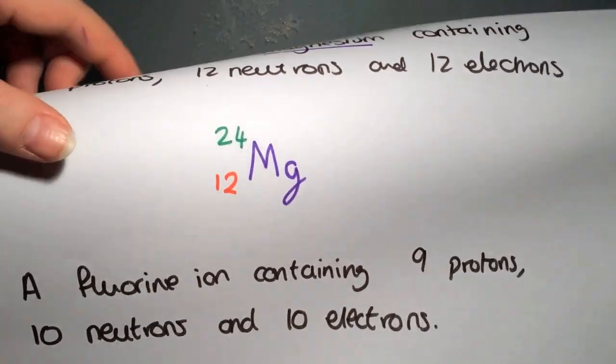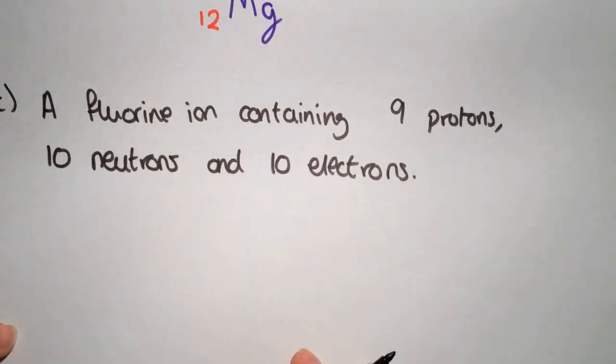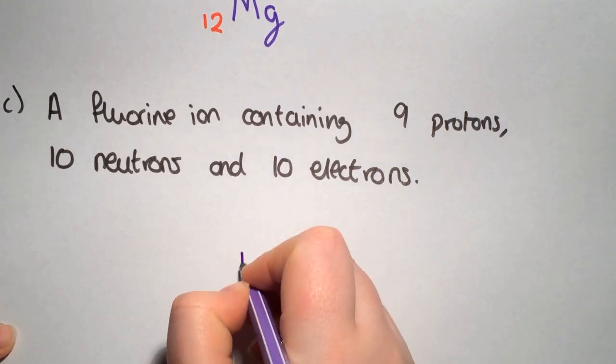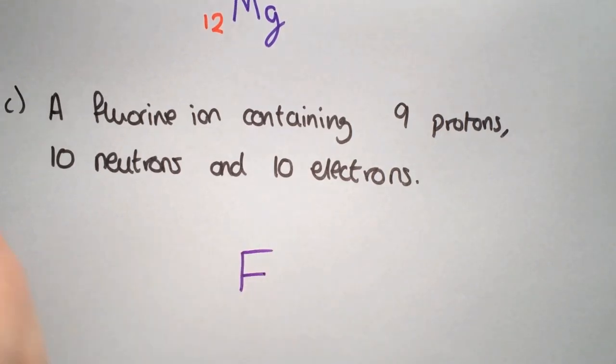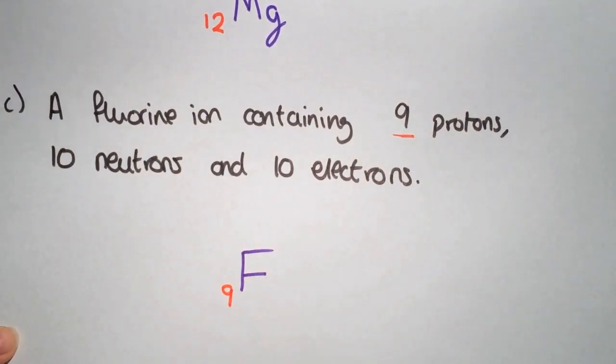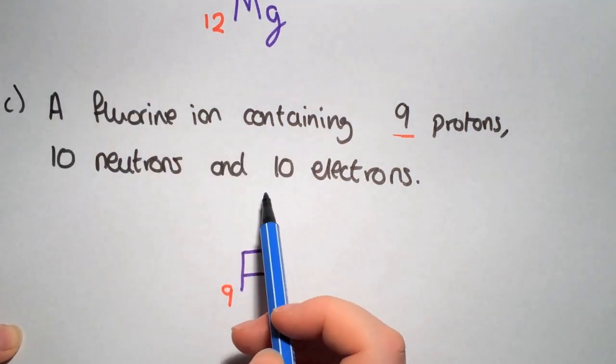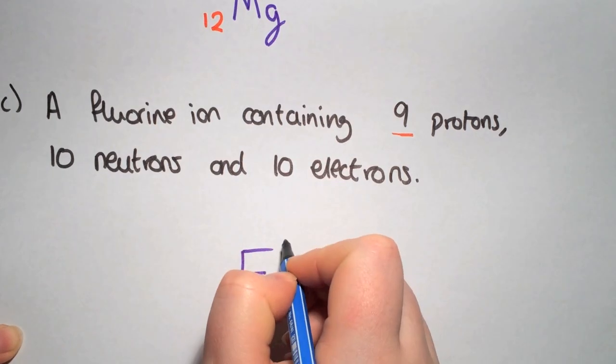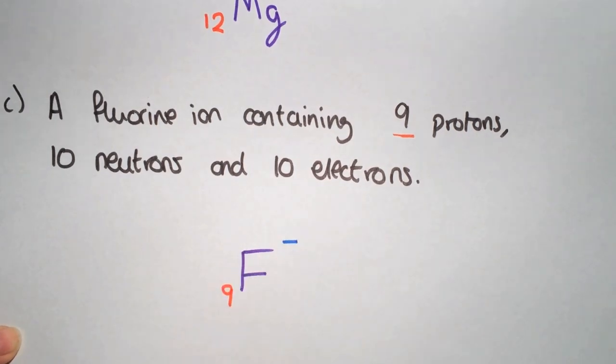Our final example is that of an ion. So the element that we are looking at is fluorine, which has a symbol F. We start with the protons. We have 9 protons. So we can put that there. But this time we have 10 electrons. So we have 1 extra electron. These electrons are negative. So we put a small negative charge here.